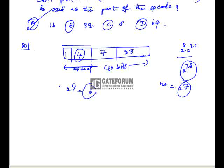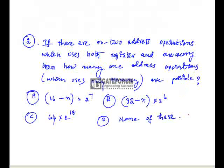There is another question linked to this. If there are N 2-address operations which use both register and memory, then how many 1-address operations which use only memory are possible?